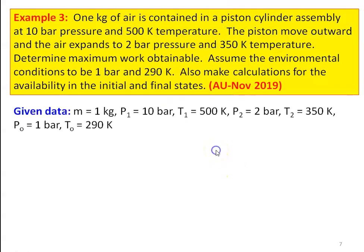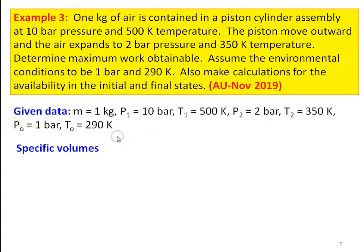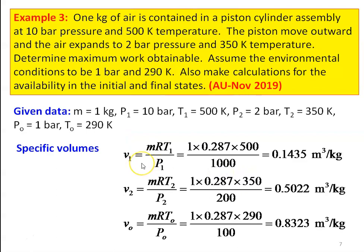Given data: M = 1 kg, P1 = 10 bar, T1 = 500 K, P2 = 2 bar, T2 = 350 K, P0 = 1 bar, T0 = 290 K. Specific volume V1 = MRT1/P1 = 1×0.287×500/1000 = 0.1435 m³/kg. V2 = MRT2/P2 = 1×0.287×350/200 = 0.5022 m³/kg. V0 = MRT0/P0 = 1×0.287×290/100 = 0.8323 m³/kg.